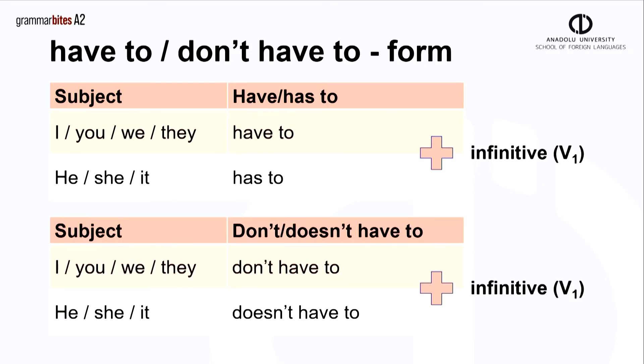For negative sentences, we follow the present simple pattern again. For subjects I, you, we, they, we use don't have to. With he, she and it, we use doesn't have to. For all subjects again, we add the infinitive, verb one.